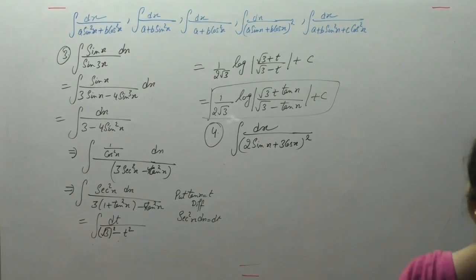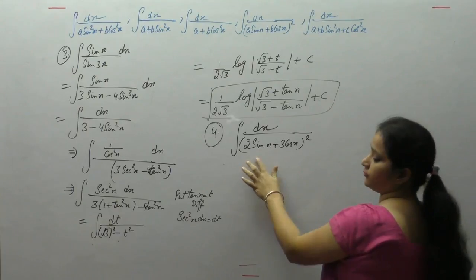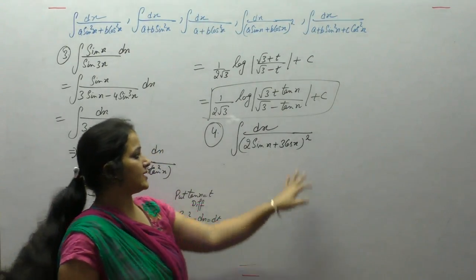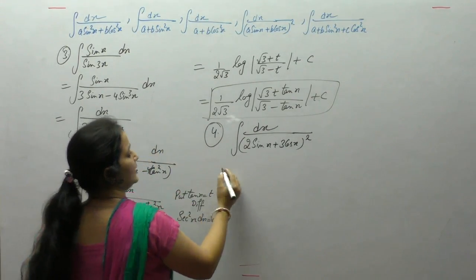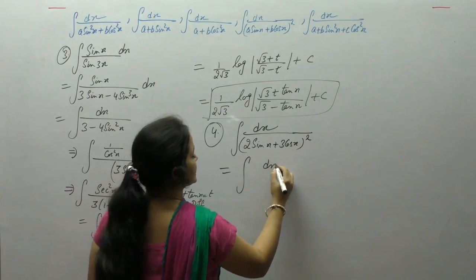Now let's start with the next question, integral of 1 upon 2 sin x plus 3 cos x whole square, divided by cos of x.